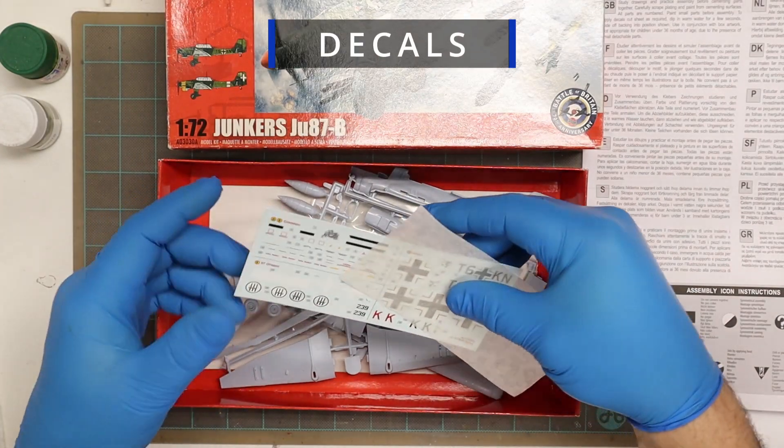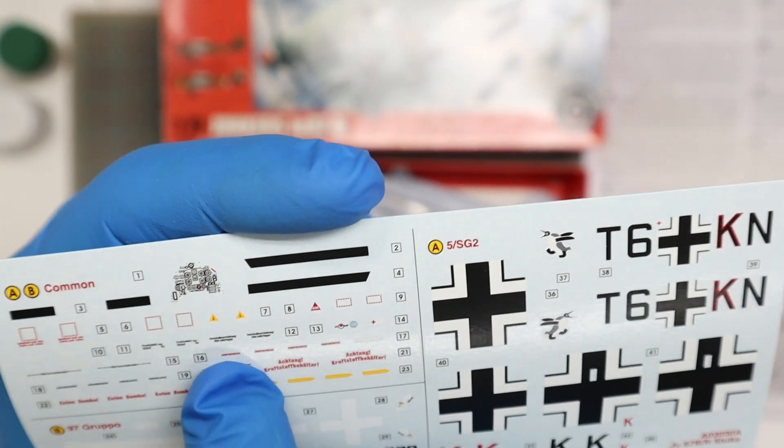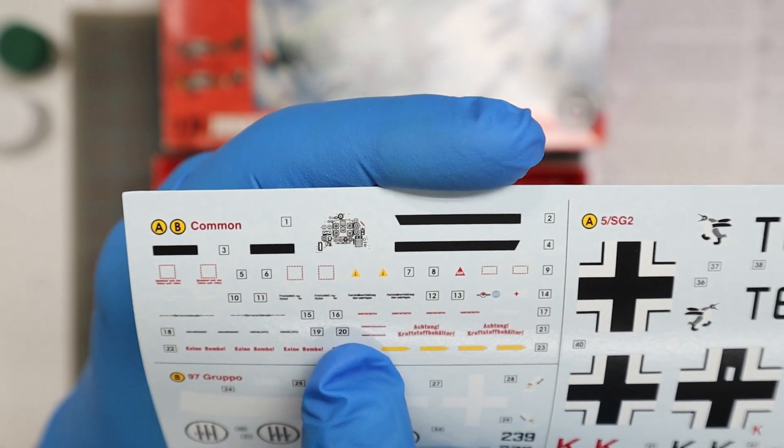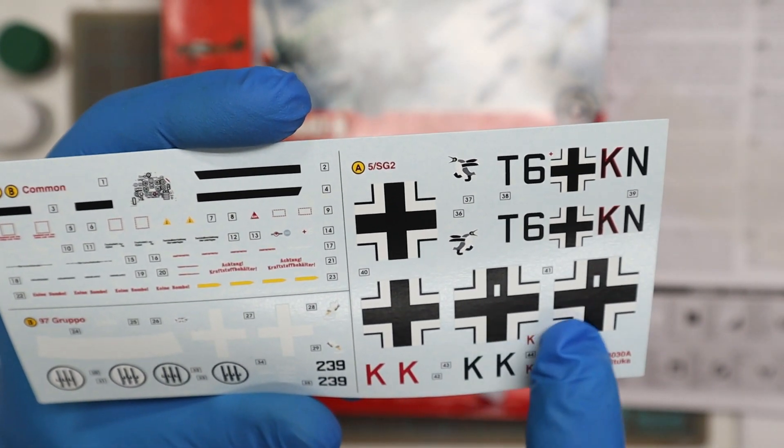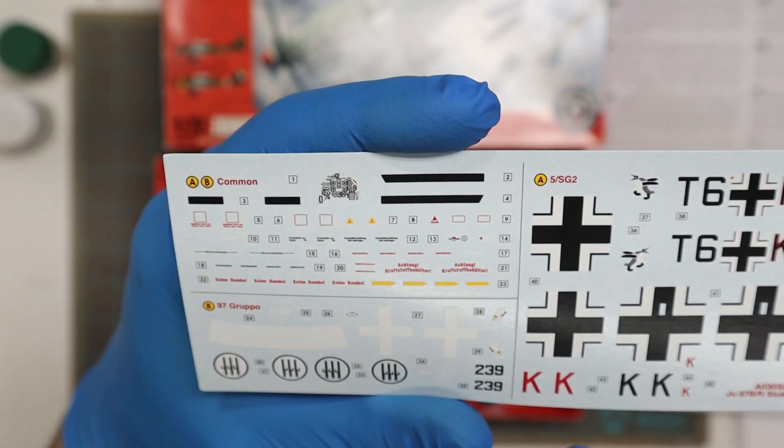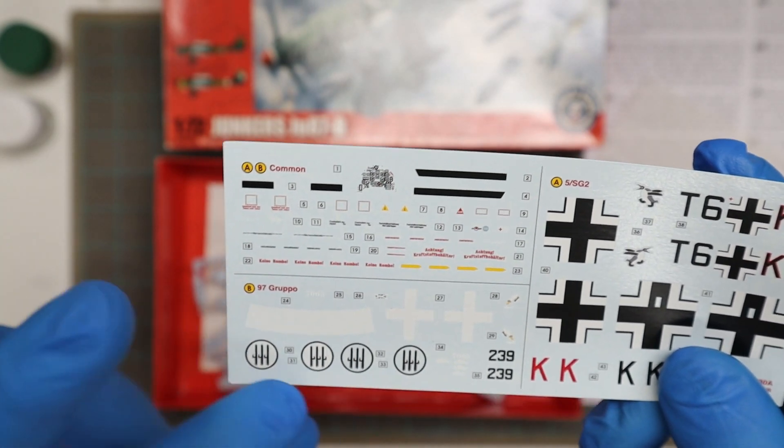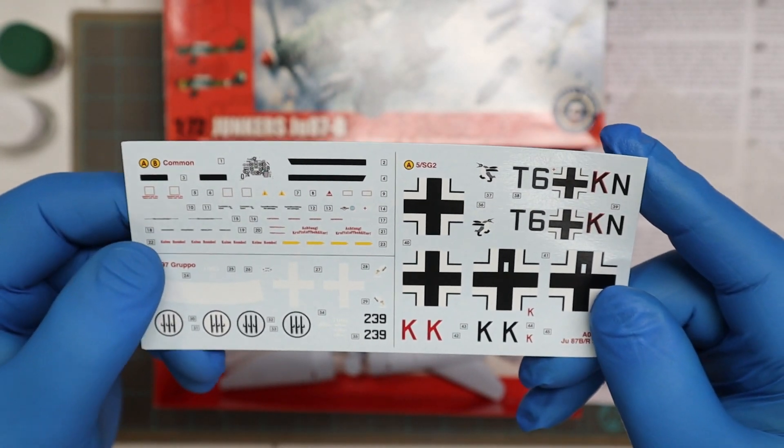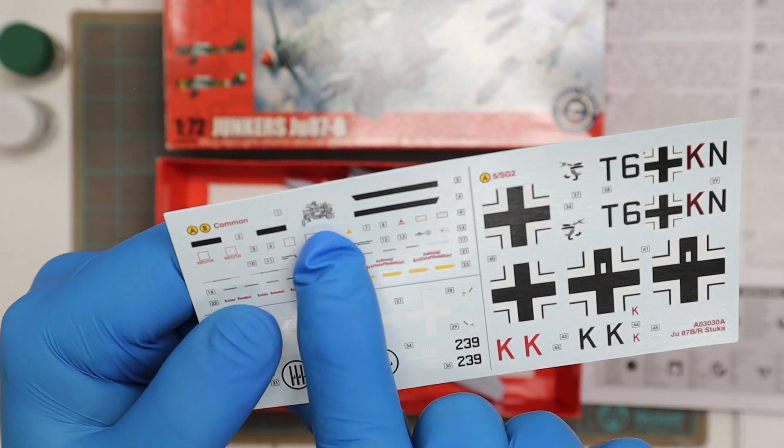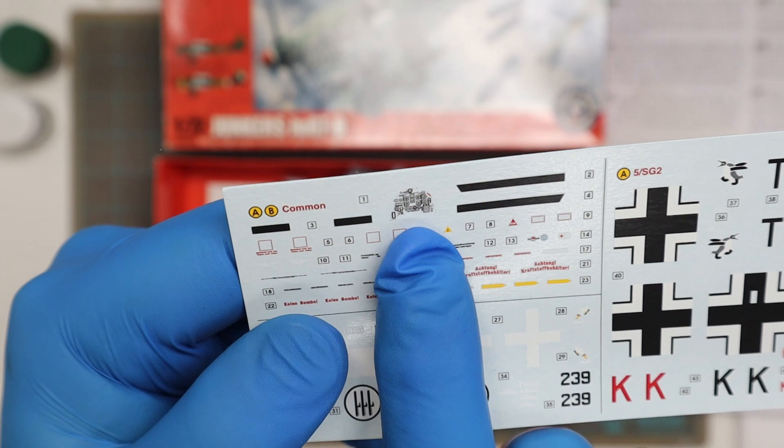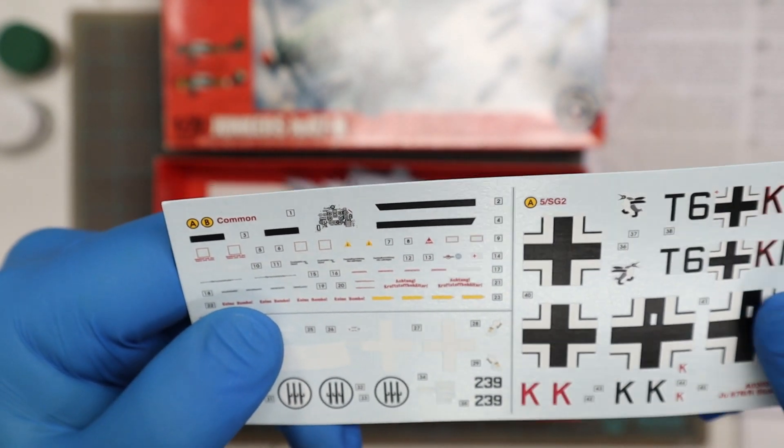Moving on to the decals. It has some nice detailed decals here for the common area, and then you've got your squadron insignias here and some decals. They're very nice, good color, they're nice and crisp. There's good detail on them, so it's not blurred or oversized or undersized. And if you look here I spotted the instrument panel decal, so that's always nice to have to get a more detailed instrument panel on the interior.